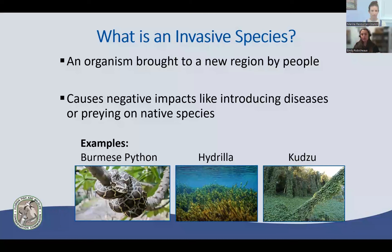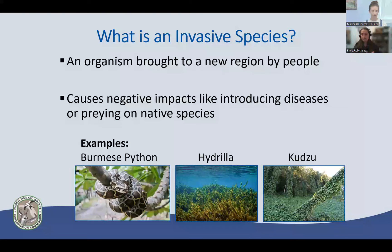An example of non-native but not necessarily invasive: something can be brought to a new area without necessarily having harmful impacts. In our marine ecosystem, an example would be a fairy basslet. They are present in our waters, but we have not discovered any negative impacts they are causing on the ecosystem around them.